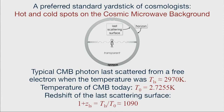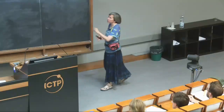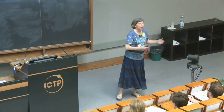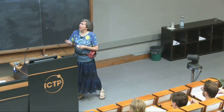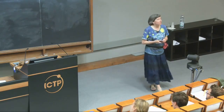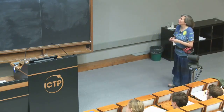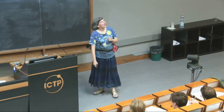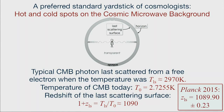Although the CMB spectrum doesn't have convenient absorption and emission lines, because it involves very well understood physics of recombination we can compute the last scattering redshift very well. The Planck 2015 results give z = 1089.90 ± 0.23. So we know the redshift part of this equation very well; now we just need the angular diameter distance.